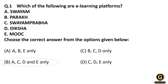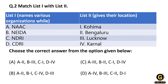Moving to the next question: they have given us a match-the-following with institutes of national importance on one side and their locations on the other. There are 55 to 60 institutes of national importance in the syllabus, and it is not possible to remember all of them and their locations. What you should do is remember 15 to 20 institutes correctly — be 100% sure about those — and then use the elimination technique for questions asking about location or names.